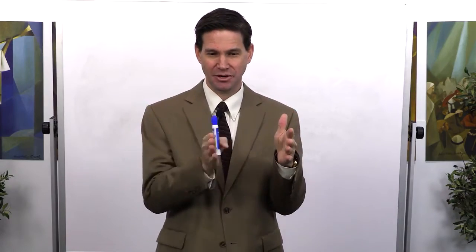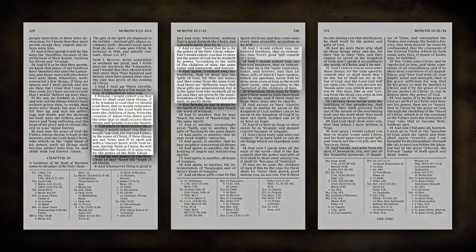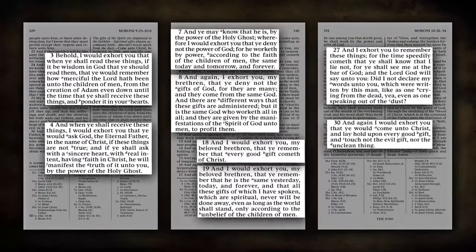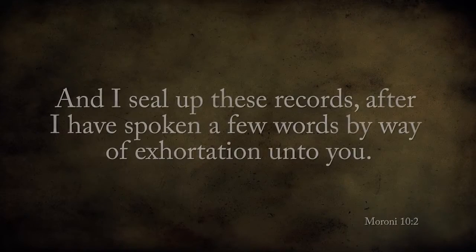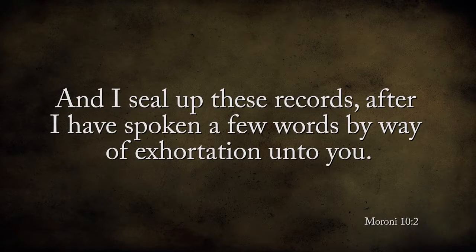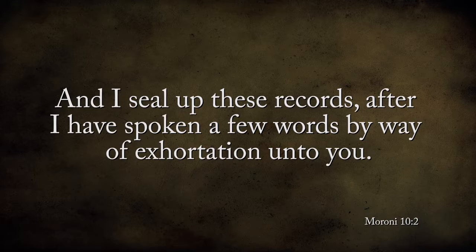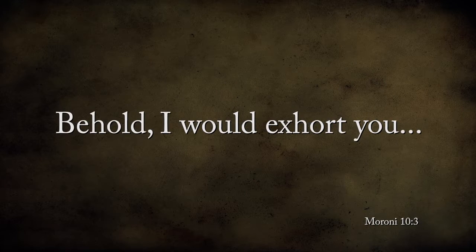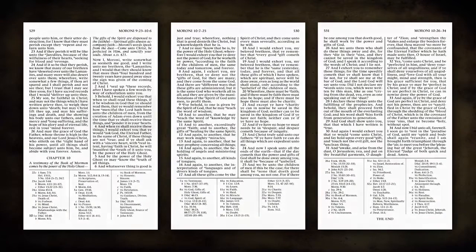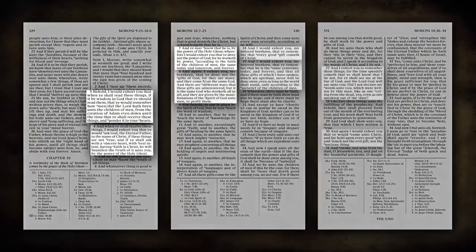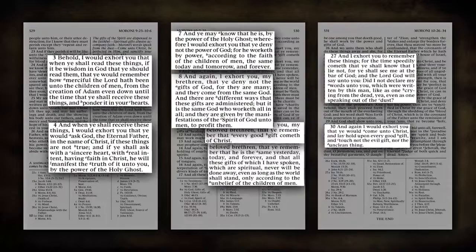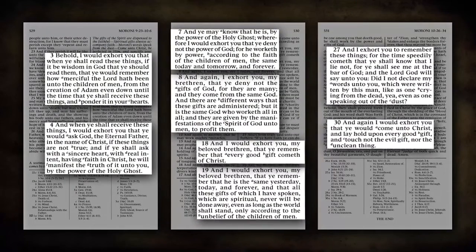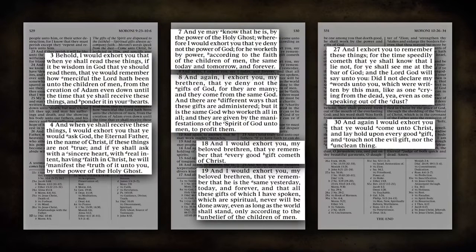He's going to couch his last teachings within the framework of eight exhortations. You'll notice he introduces these in verse 2, saying, 'I seal up these records after I have spoken a few words by way of exhortation unto you.' Then he opens verse 3 with 'Behold, I would exhort you,' and continues in verses 4, 7, 8, 18, 19, 27, and 30. We're going to work our way through the chapter looking at each one of these exhortations one at a time.